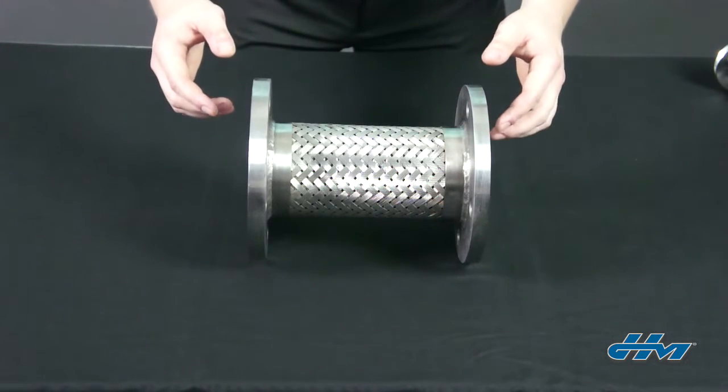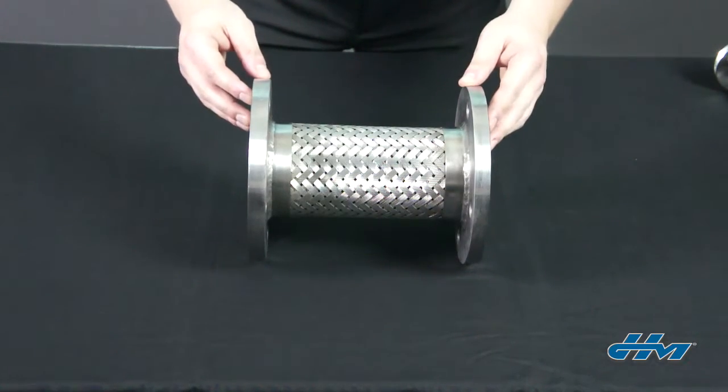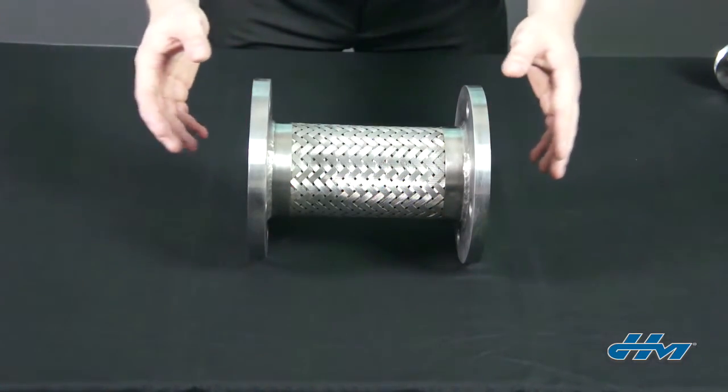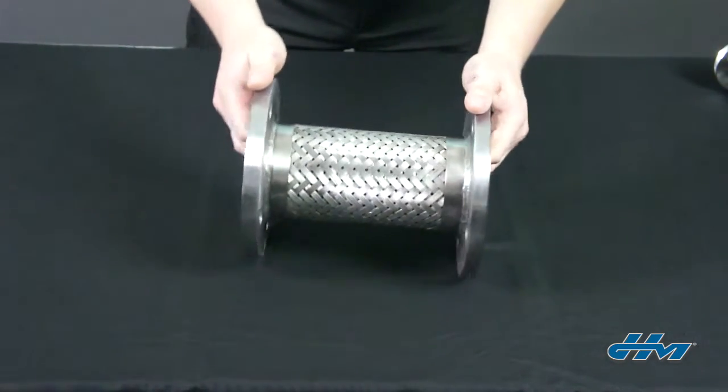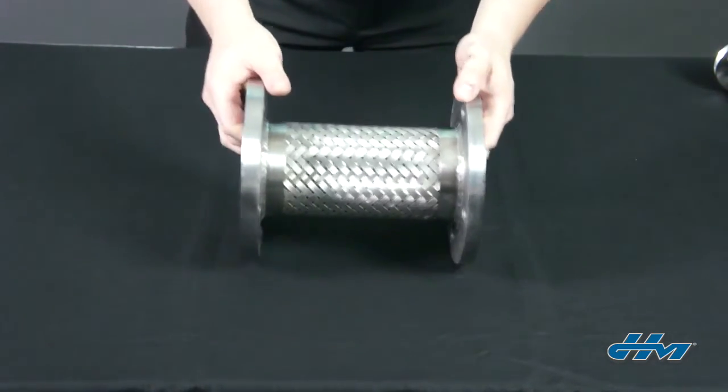Torquing the hose during installation is common and can be an issue. If the existing piping does not have any kind of swivel or rotation, don't use an assembly with fixed end fittings at both ends. Otherwise, installation could torque the assembly and strain it in service.